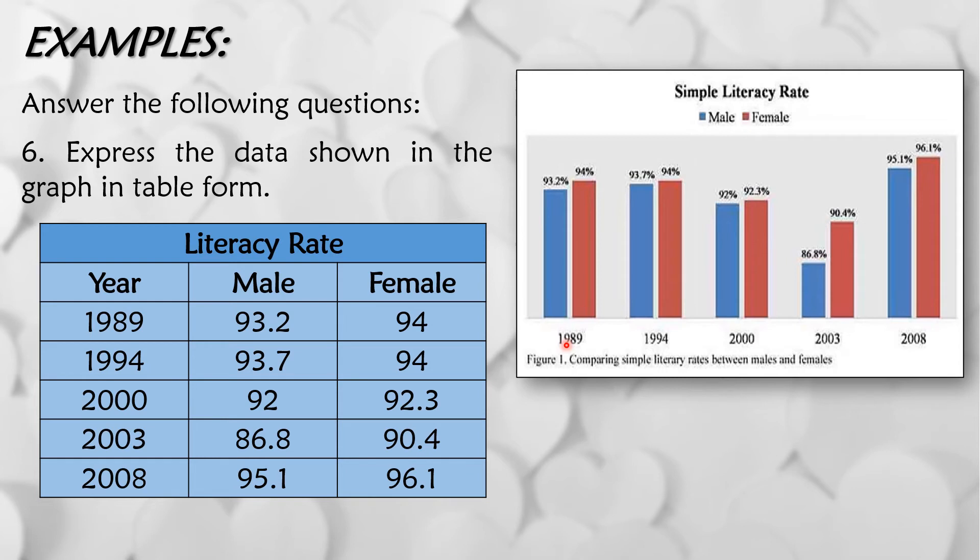So sa year na 1989, so ito yun, ang percent ng literacy rate ng male is 93.2, and then sa female naman is 94%. And then sa 1994, so ganito lamang ililista lang natin yung given data. So iyan yung tinatawag na table form or tabular form.